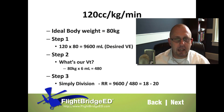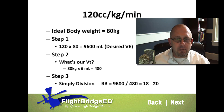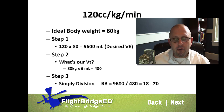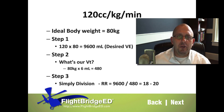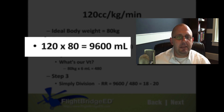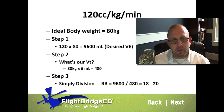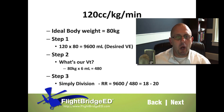Let's look at this from the perspective of the 120 cc's per kilogram per minute calculation — your gold standard formula. For this example, ideal body weight for a five-foot-ten male patient is 80 kilos. We take 120 cc's times 80 kilograms, which gives us 9,600 mils — that's our desired minute ventilation per minute, also equal to 9.6 liters per minute.